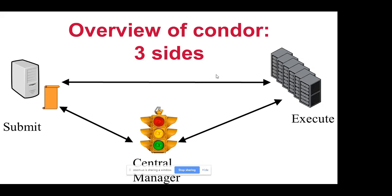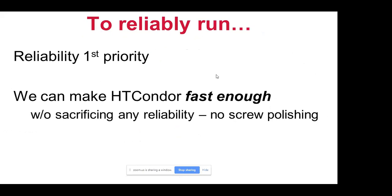The first pillar of the philosophy is reliable execution, taken very seriously. The goal is to make Condor fast enough for any size pool a reasonable organization would have — not faster than that, because over-optimizing for speed makes it less reliable. A tremendous amount of work goes into ensuring system reliability, even at the expense of short-term performance.